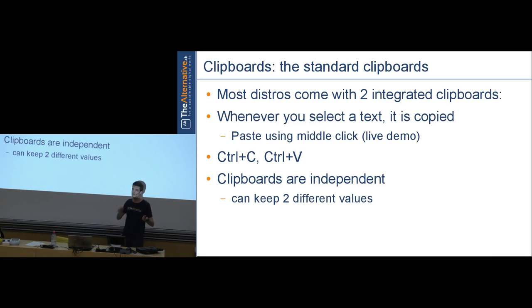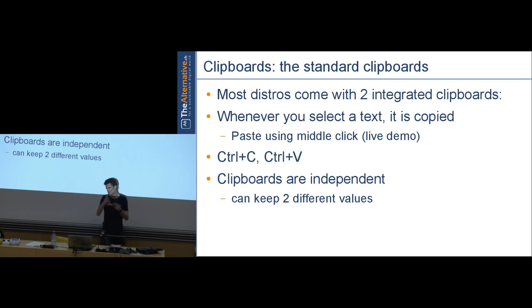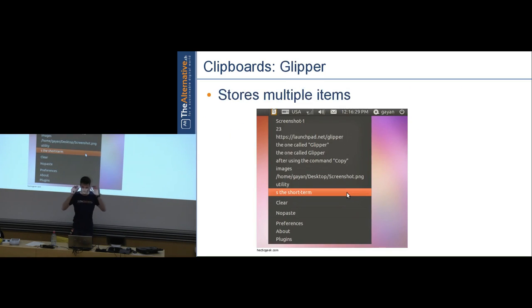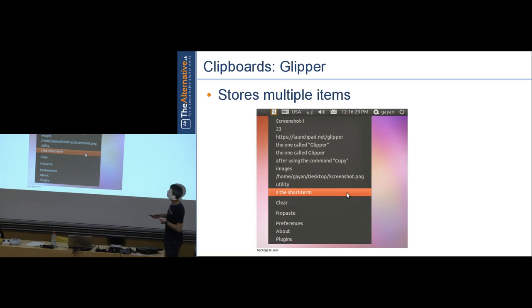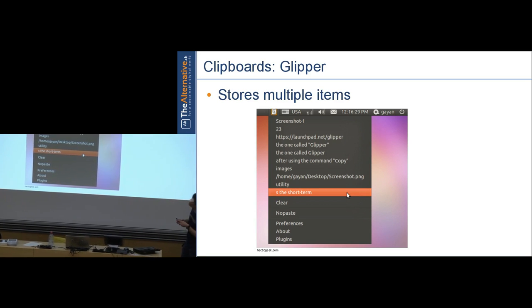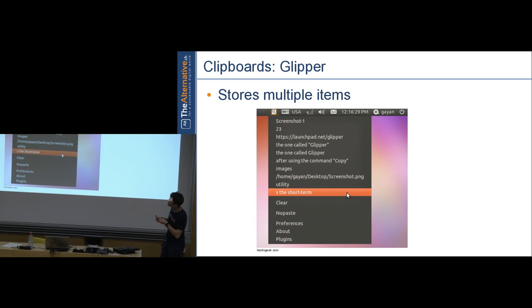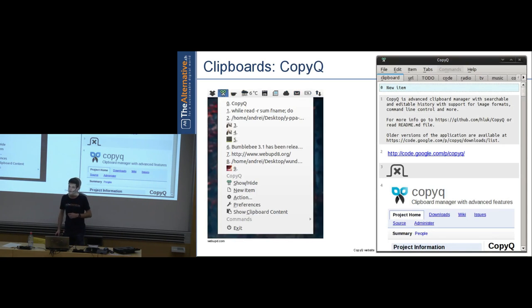On the topic of clipboards: Ctrl+C and middle-click are two separate default clipboards, each holding one item. If that's not enough — especially since we copy images, web pages, and everything — there's Glipper, a multiple clipboard manager. It holds the last 10 (or however many you configure) copied items, accessible from a top-bar icon, and you paste with Ctrl+V.